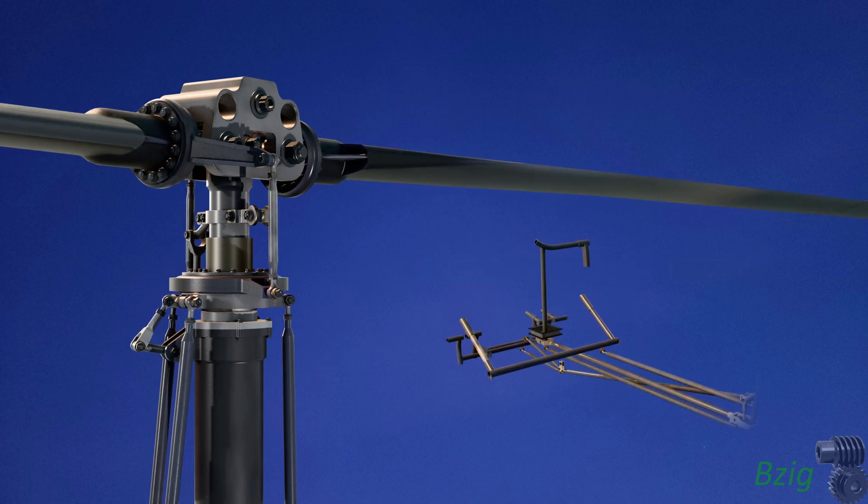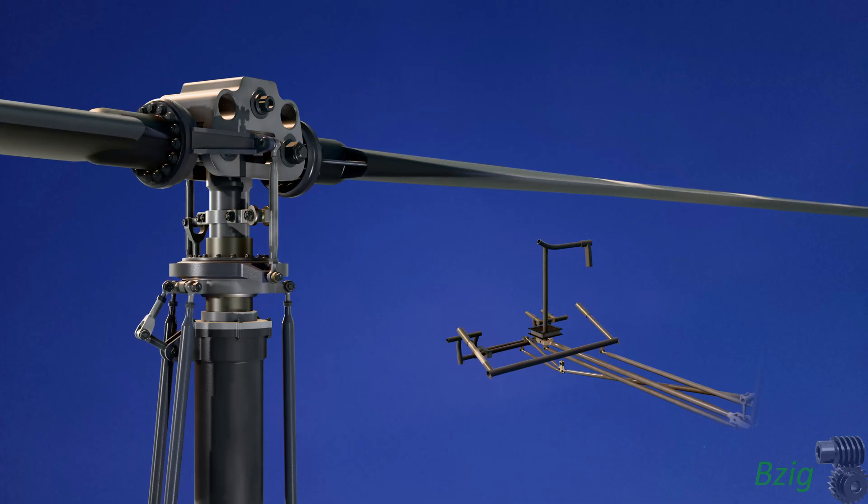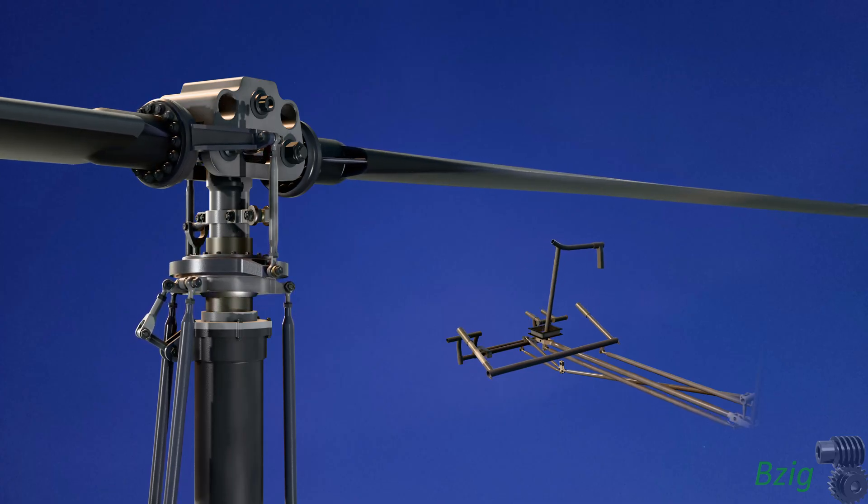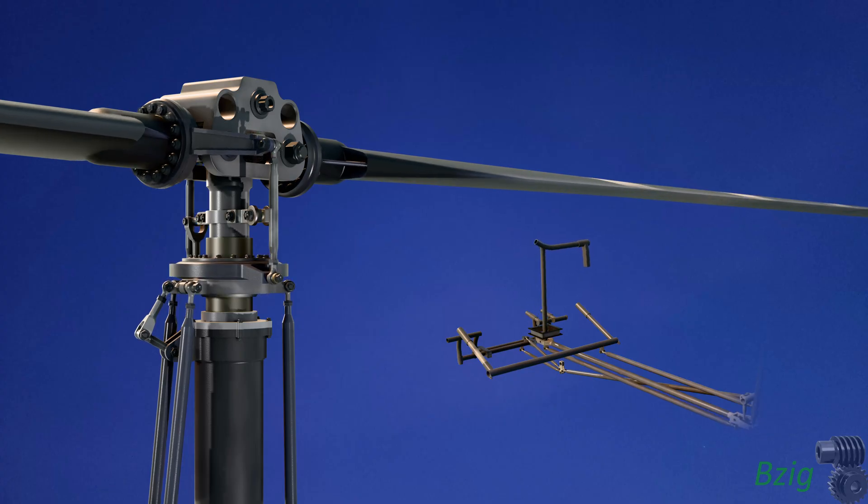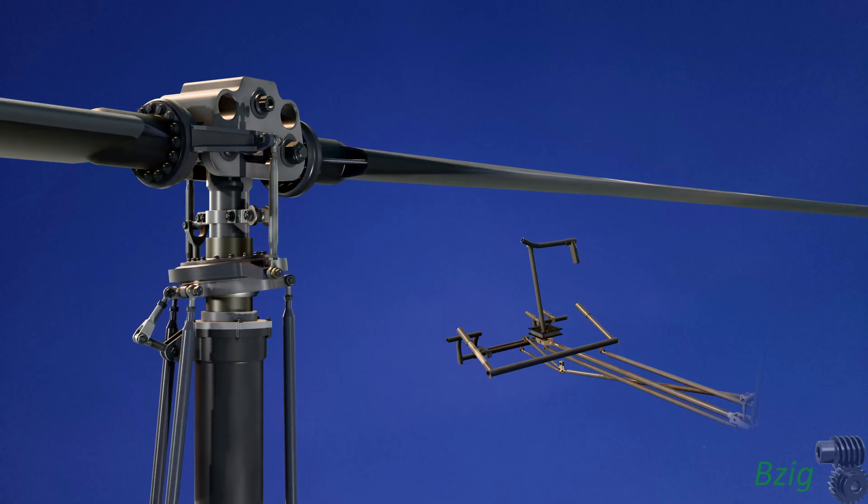All three push rods move in unison to control collective pitch. The front two push rods move alternately side to side to control lateral cyclic pitch. And the front and aft push rods move alternately front to back to control longitudinal cyclic pitch.